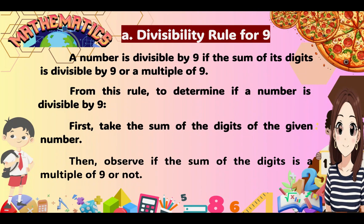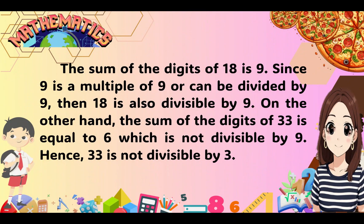Now let's talk about the divisibility rule for 9: a number is divisible by 9 if the sum of its digits is divisible by 9 or a multiple of 9. To determine if a number is divisible by 9, first take the sum of its digits, then observe if that sum is a multiple of 9. For example, the sum of the digits of 18 is 9. Since 9 is a multiple of 9, then 18 is divisible by 9. On the other hand, the sum of the digits of 33 is 6, which is not divisible by 9, so 33 is not divisible by 9.